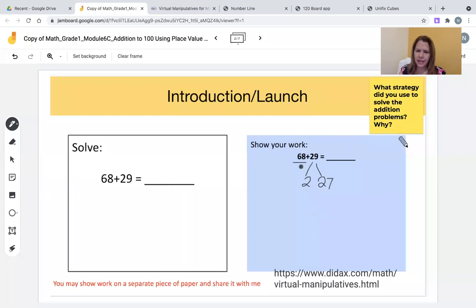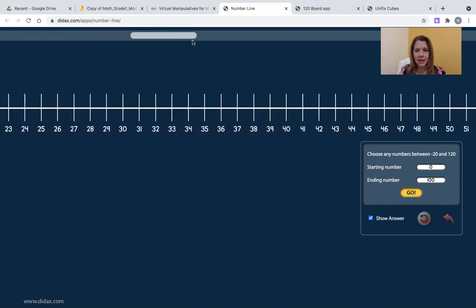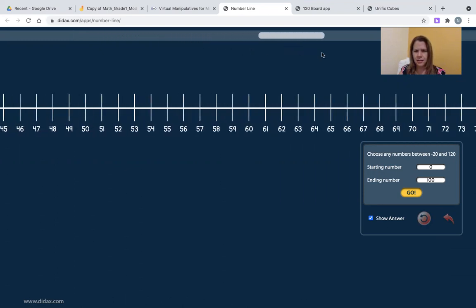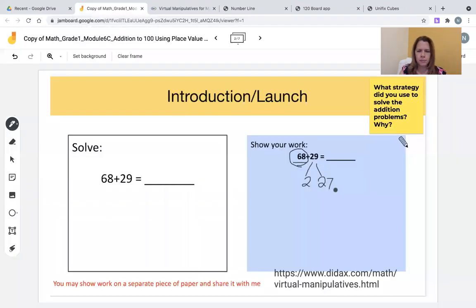Now I have a number line from zero all the way to 100. When I look at my problem, my first addend is 68. So I'll go to my number line and begin at 68. I'll click on the top button and scroll until I arrive at my first addend, which is 68. I see 68 right here. I'll plot right onto 68. When I was completing 68 plus 29, I broke apart 29 into 2 and 27.